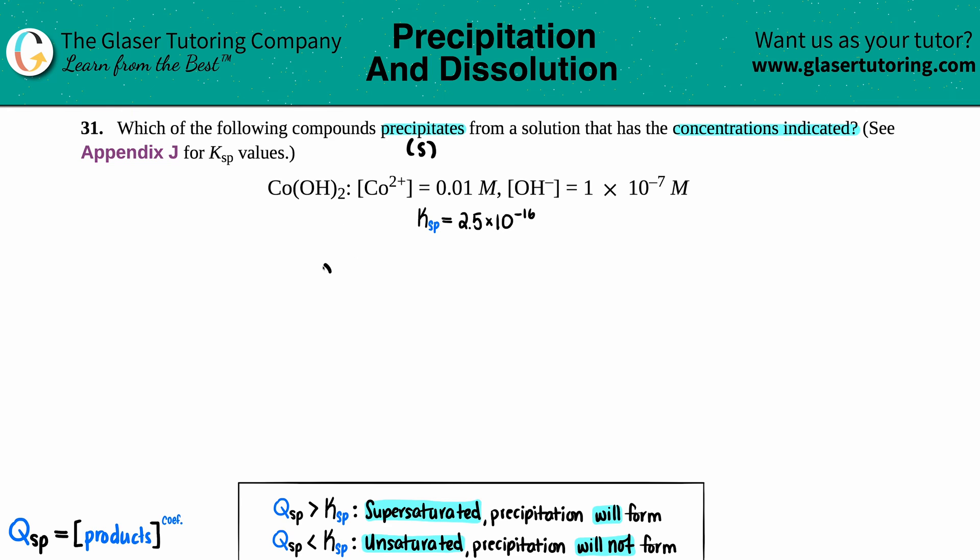To do this, we need a balanced equation. Co(OH)2 is the solid we're starting with, double arrow because we're dealing with equilibrium values. They gave us the two ions: cobalt 2+ aqueous.